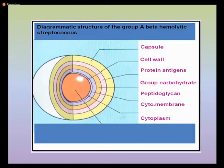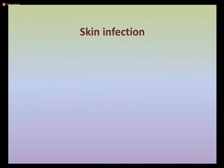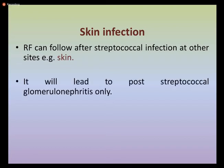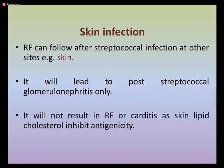This picture shows different layers in a cross section of group A beta-hemolytic streptococcal — the capsule, cell wall, and protein antigens. The antigens present in the outer protein cell wall of GABHS induce an antibody response in the host that results in autoimmune damage. Regarding skin infection: streptococcal infection at sites other than the pharynx, such as skin, will lead to post-streptococcal glomerulonephritis only and will not result in rheumatic fever or carditis, as skin lipids inhibit antigenicity.